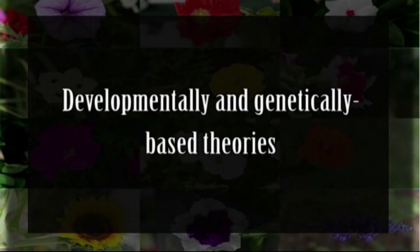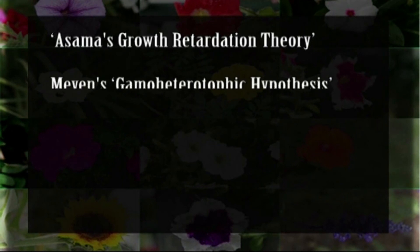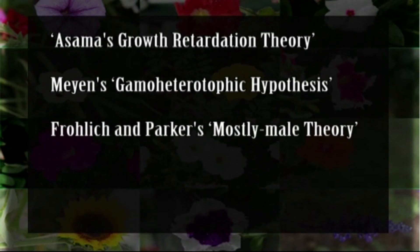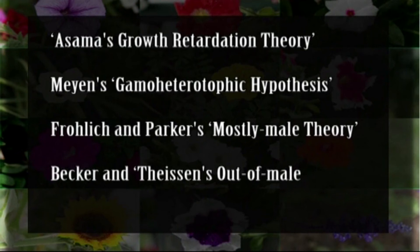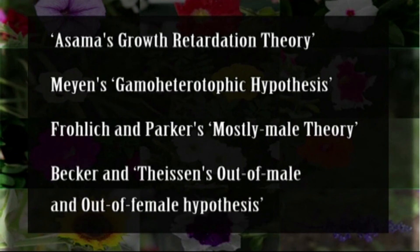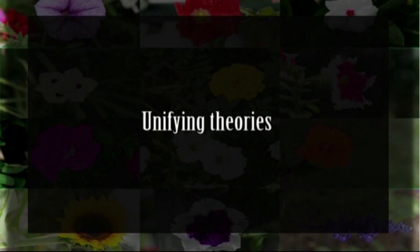Developmentally and genetically based theories include ideas on the origin of angiosperms based on evidence from the study of ontogeny of seed plants. These include Asama's Growth Retardation Theory, Mayan's Gamoheterotrophic Hypothesis, Frohlich and Parker's Mostly Male Theory, and Becker and Theissen's Out of Male and Out of Female Hypotheses. The Out of Male and Out of Female hypotheses are based on a floral homeotic protein quartet model and evolutionary development of pollen-bearing and ovule organs of cone axes.